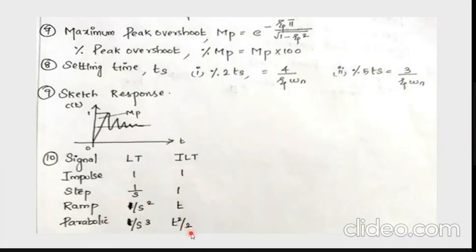So these are the time domain specifications, which are basically classified into five types: delay time, rise time, peak time, maximum overshoot, and settling time.